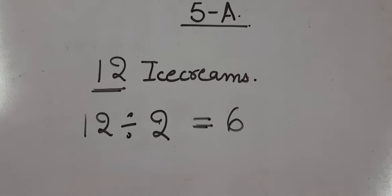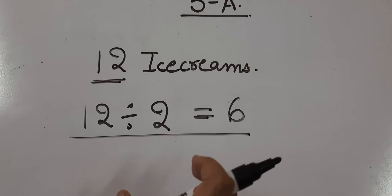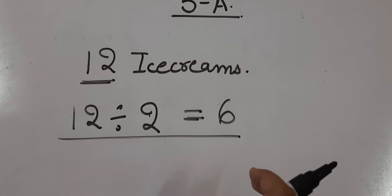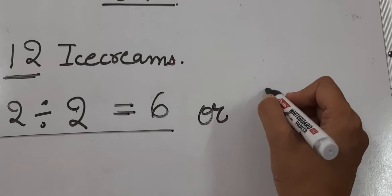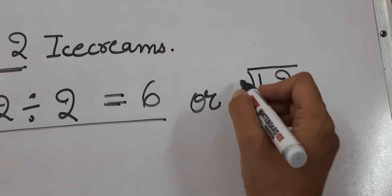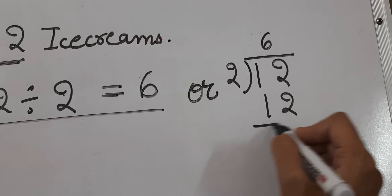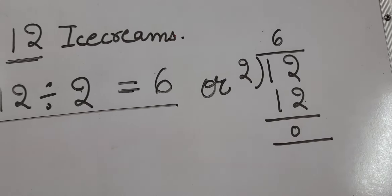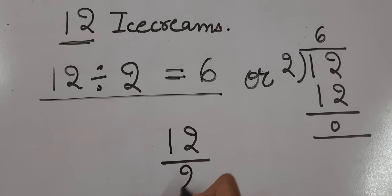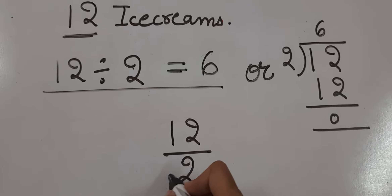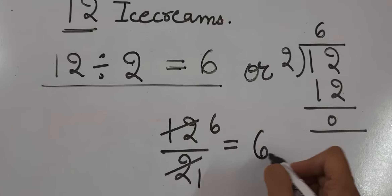This equation which we have got here is known as the division sentence. This division sentence can be written in working form as 12 divided by 2, so 2 goes into 12. This can also be written as 12 divided by 2: 2 ones are 2, 2 sixes are 12, and the answer will be 6.